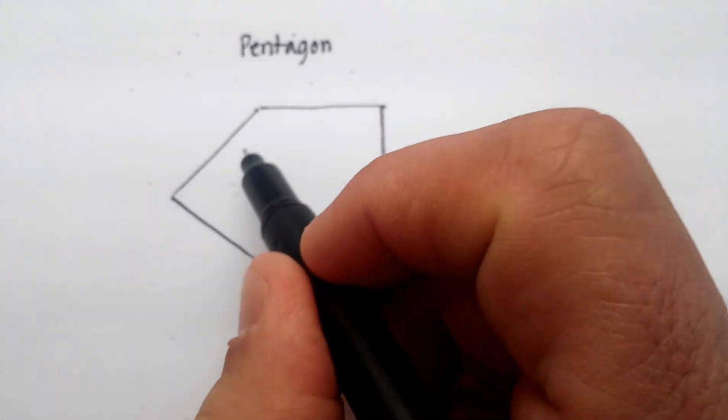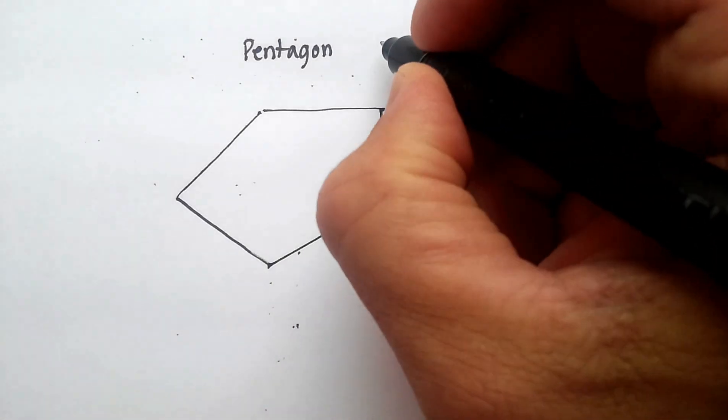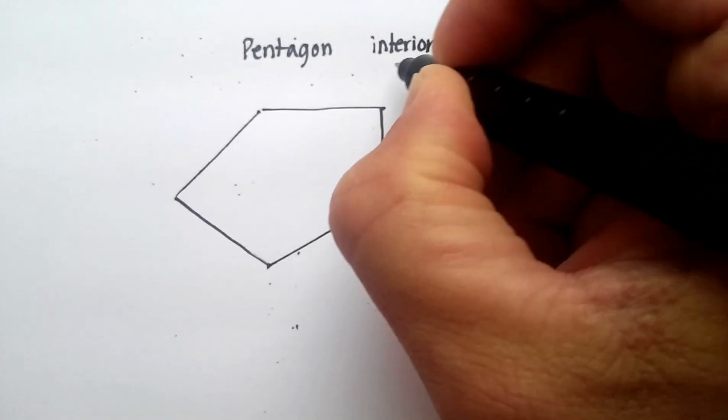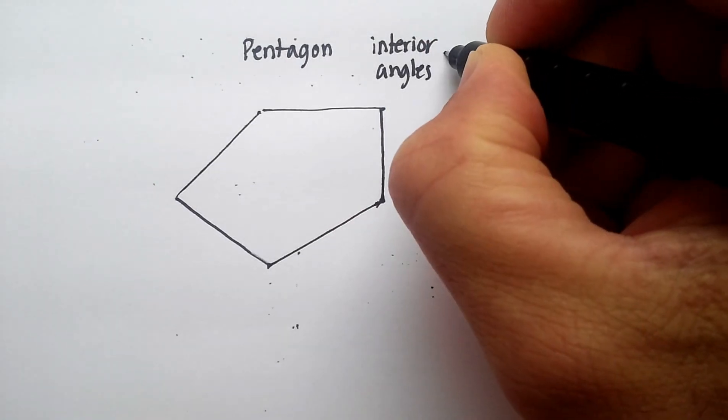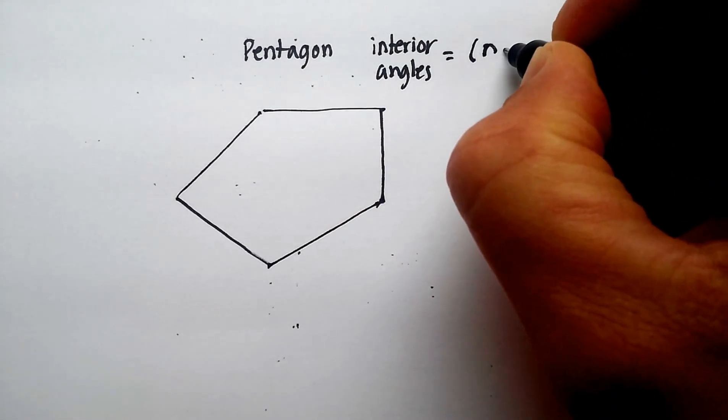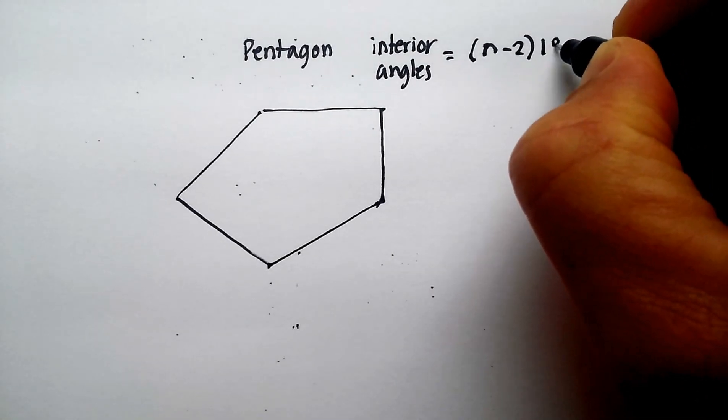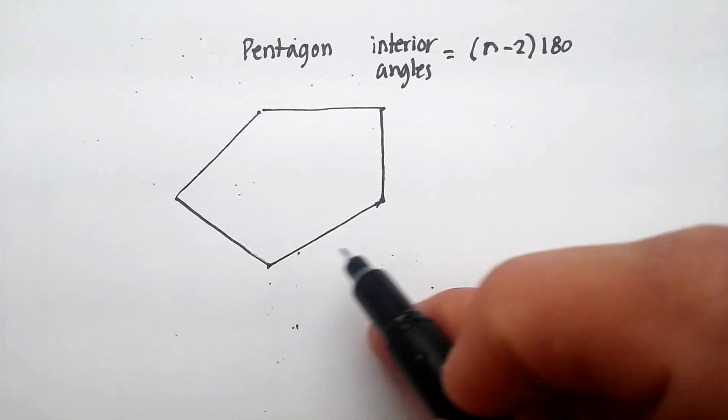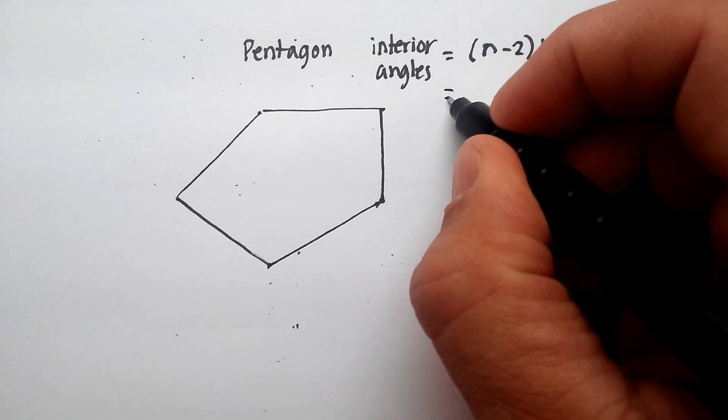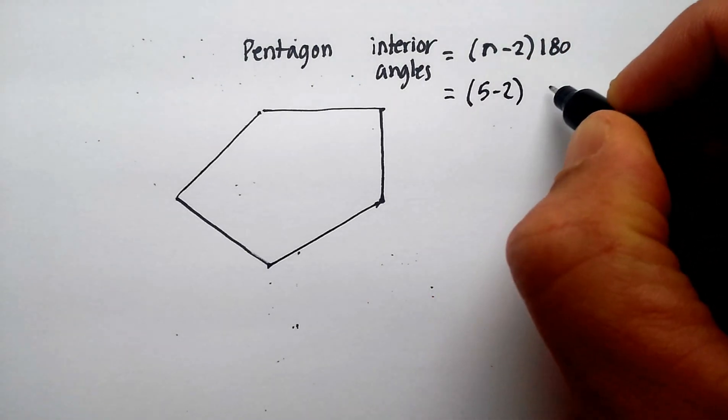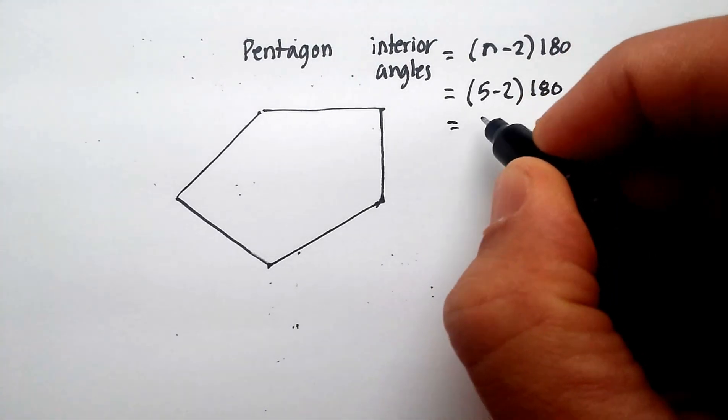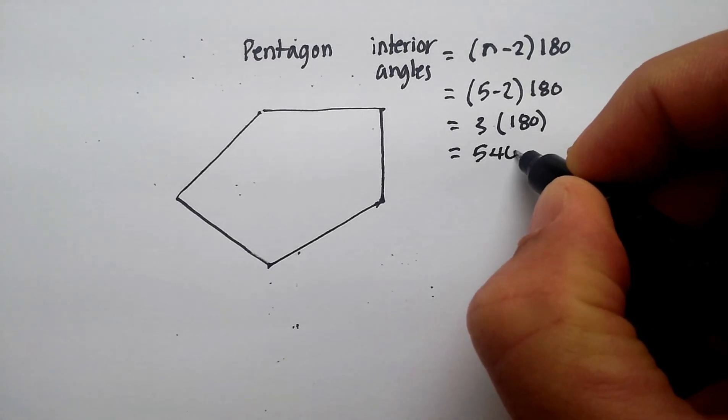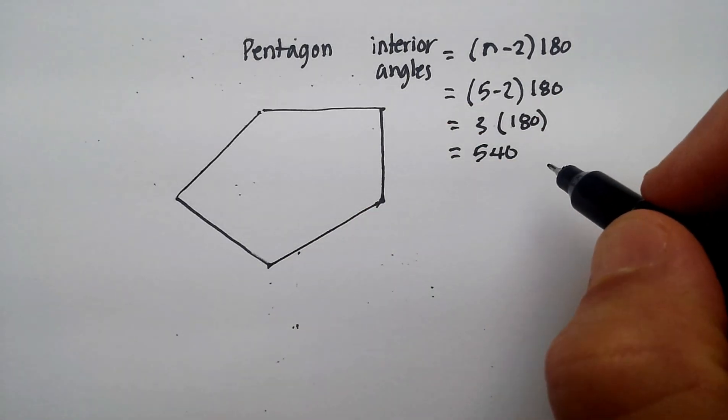And I know that the interior angles of a pentagon follow this formula. So the interior angles equal n minus 2 times 180. And remember that n represents the number of sides in the figure. So I can figure this out. It would be 5 minus 2 times 180. That gives me 3 times 180. That gives me 540 degrees, interior degrees, in a pentagon.